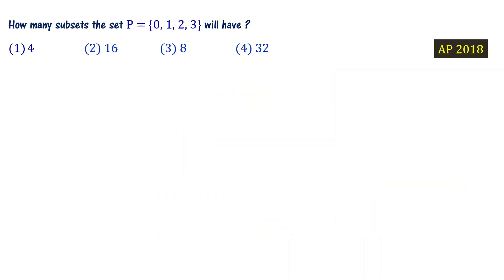How many subsets does the set P containing elements 0, 1, 2, 3 have? This is AP policy of 2018. We can make use of the formula 2 power n, where n is the number of elements in the set, to find the number of subsets.